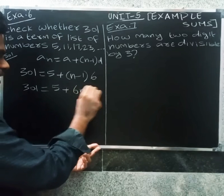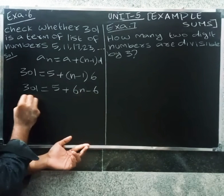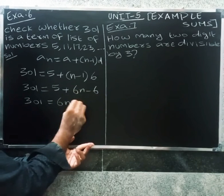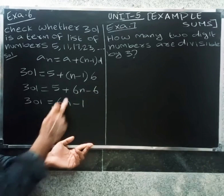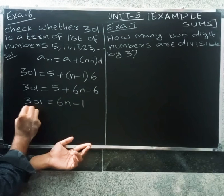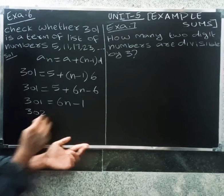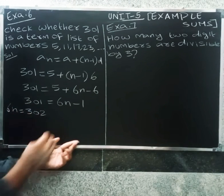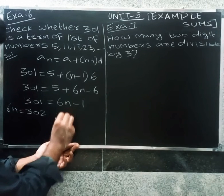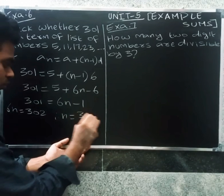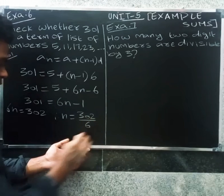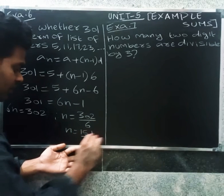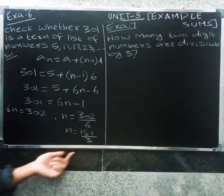So 301 = 6n − 6 + 5, which gives 301 = 6n − 1. Therefore 6n = 302, so n = 302 divided by 6, which simplifies to n = 151/3.